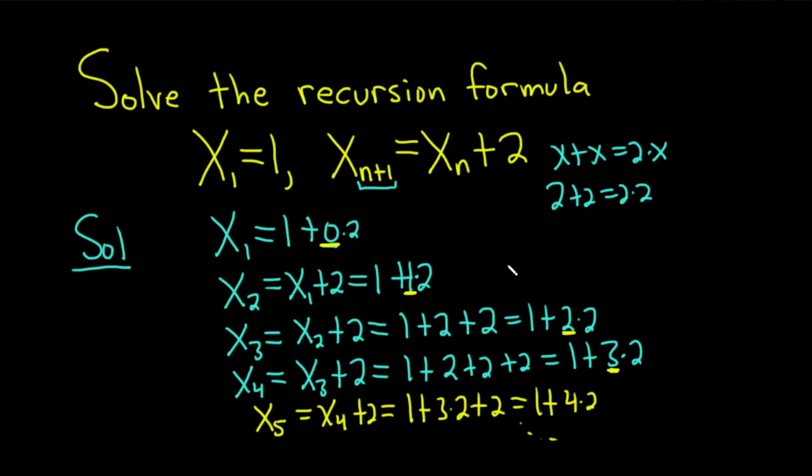At this point, I think the pattern is pretty clear. We can see that X sub n is equal to 1 plus, and it's always 1 less, so n minus 1 times 2. And this should be valid for n greater than or equal to 1.